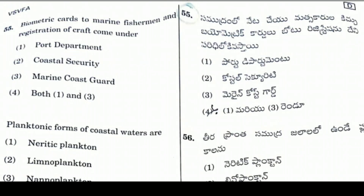Question 55: Biometric cards to marine fishermen and registration of crafts come under — the right answer is Option 2, Coastal Security. Coastal security covers this.